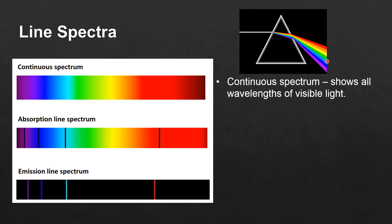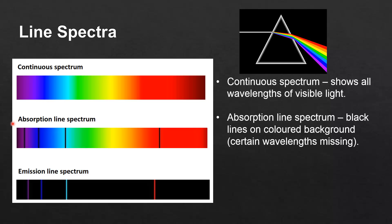Next we have an absorption line spectrum. So an absorption line spectrum has black lines on a colored background as you can see here these black lines. That means that certain wavelengths of visible light are missing from the absorption line spectrum.